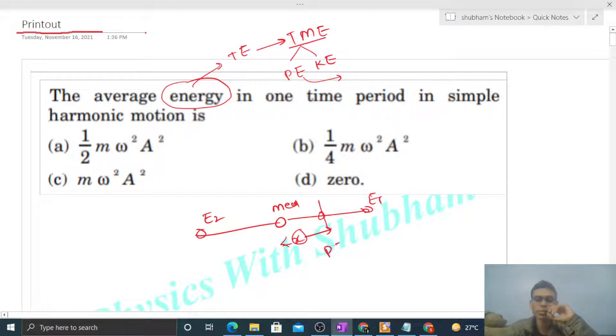Then here the potential energy will be half of k into x square. What will be the value of kinetic energy at this position? Half of k into a square minus x square, where a is the amplitude of this SHM.